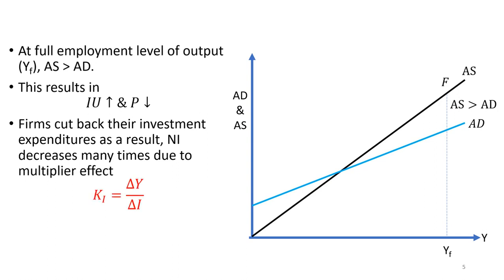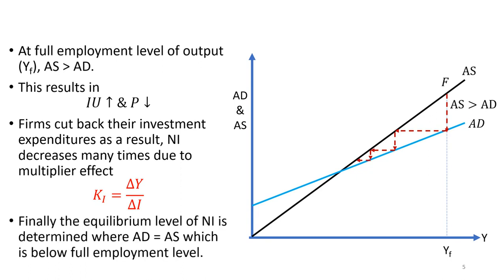This decrease in prices results in a loss for firms. As a reaction, firms cut back their investment, and because of the multiplier effect, national income decreases many times. Finally, the equilibrium level of national income is determined where aggregate demand is equal to aggregate supply, represented by point E on the diagram. This level of output is below the full employment level, therefore the gap represents the deflationary gap.